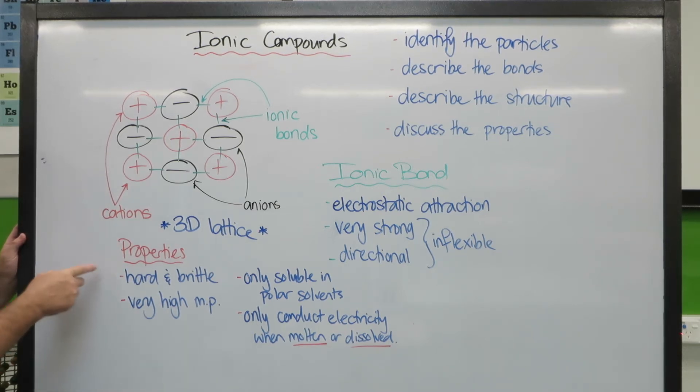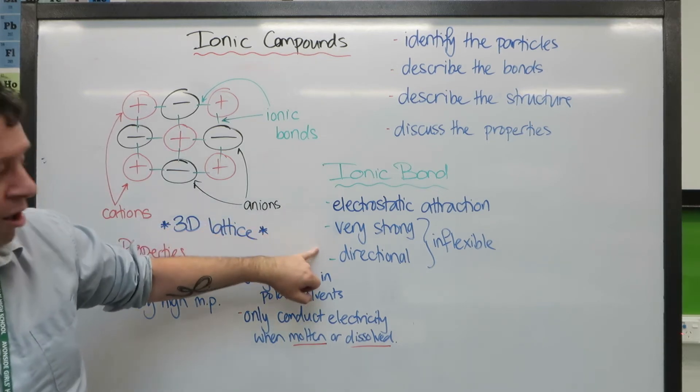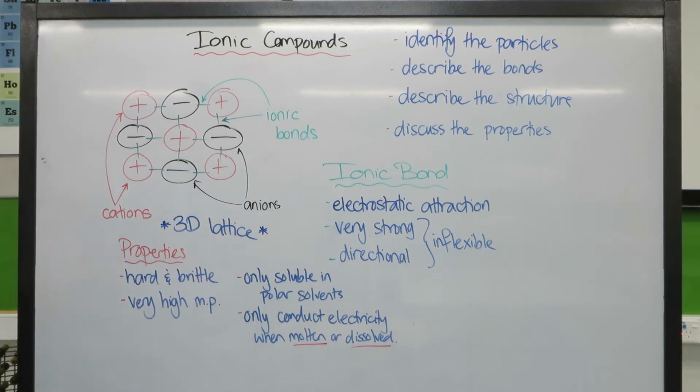So the first one, the hard and brittle. This is to do with the ionic bond. Because it's very strong and it's directional, that makes it hard. It takes a lot of energy to break that.